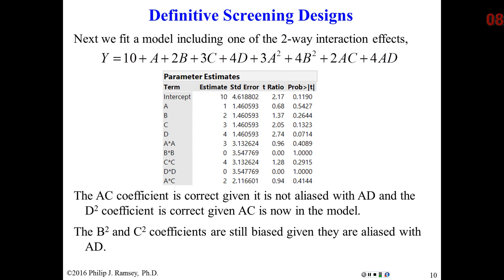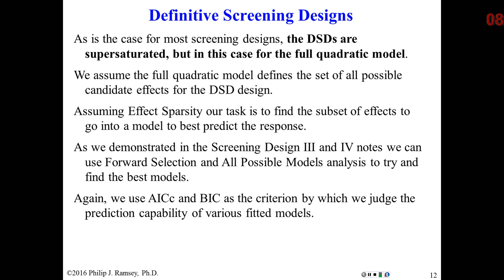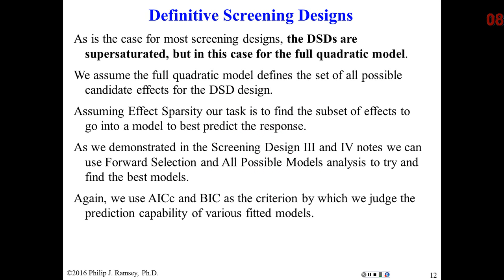On the last slide, as we add the correct terms to the model, the coefficients all become correct because all partial aliases are included in the model. So keep in mind that definitive screening designs have important properties: main effects are orthogonal and free of any partial aliasing with quadratics or two-way interactions. Quadratic terms and two-way interactions are partially aliased with each other, but assuming effect sparsity holds, it is possible to fully characterize a process with one definitive screening design.